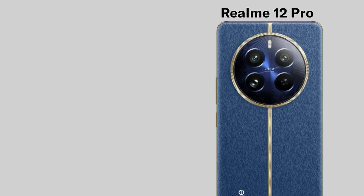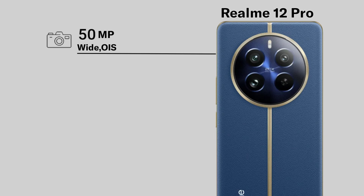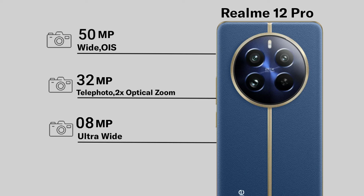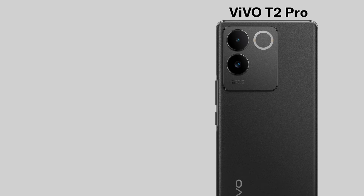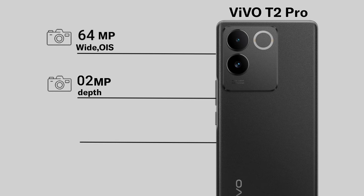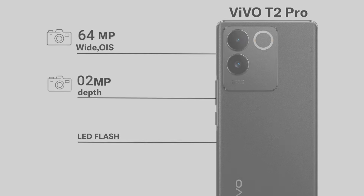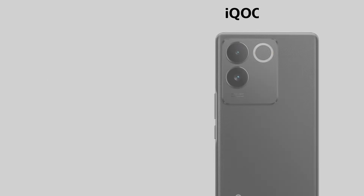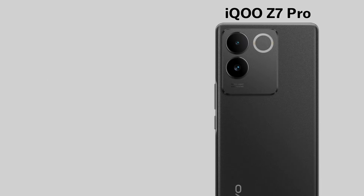Now for the camera section. Realme 12 Pro camera, Vivo T2 Pro camera, and iQOO Z7 Pro camera specs compared.